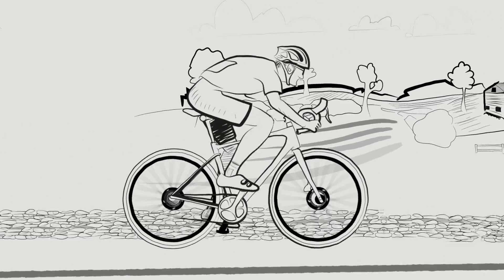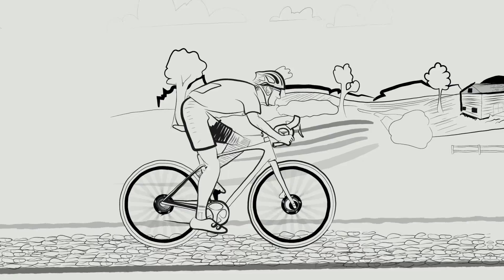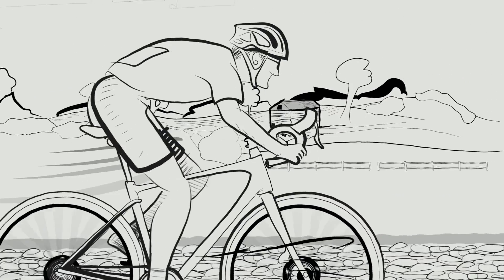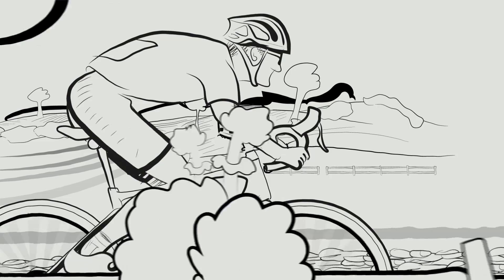And with the Future Shock's location above the head tube, you're suspended, not the bike. So you get all the benefits of a compliant ride without taking a hit on handling or efficiency.